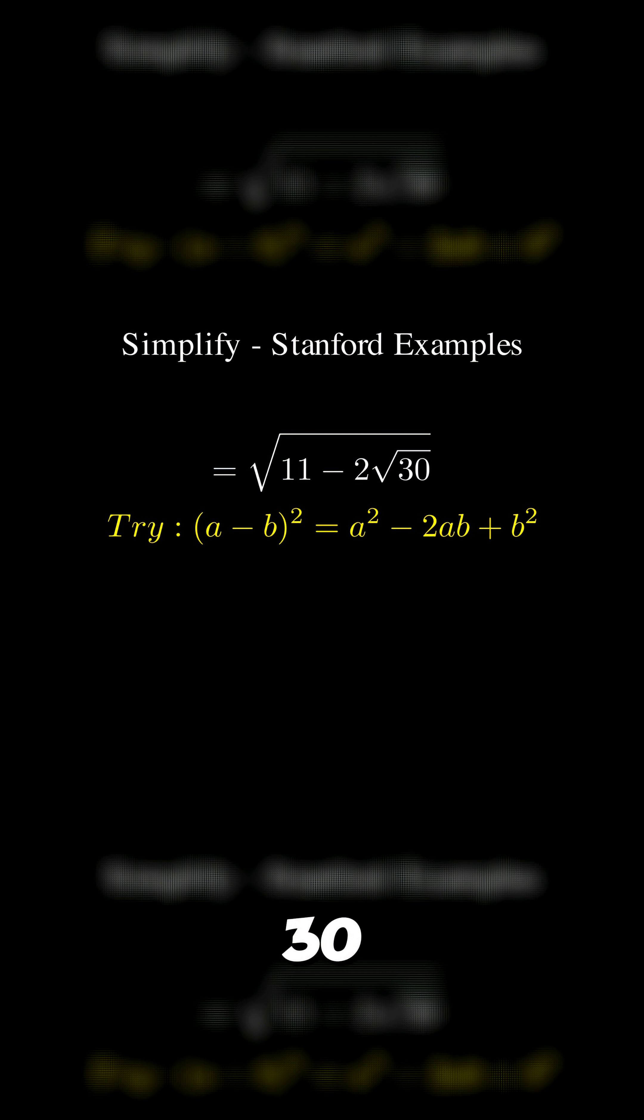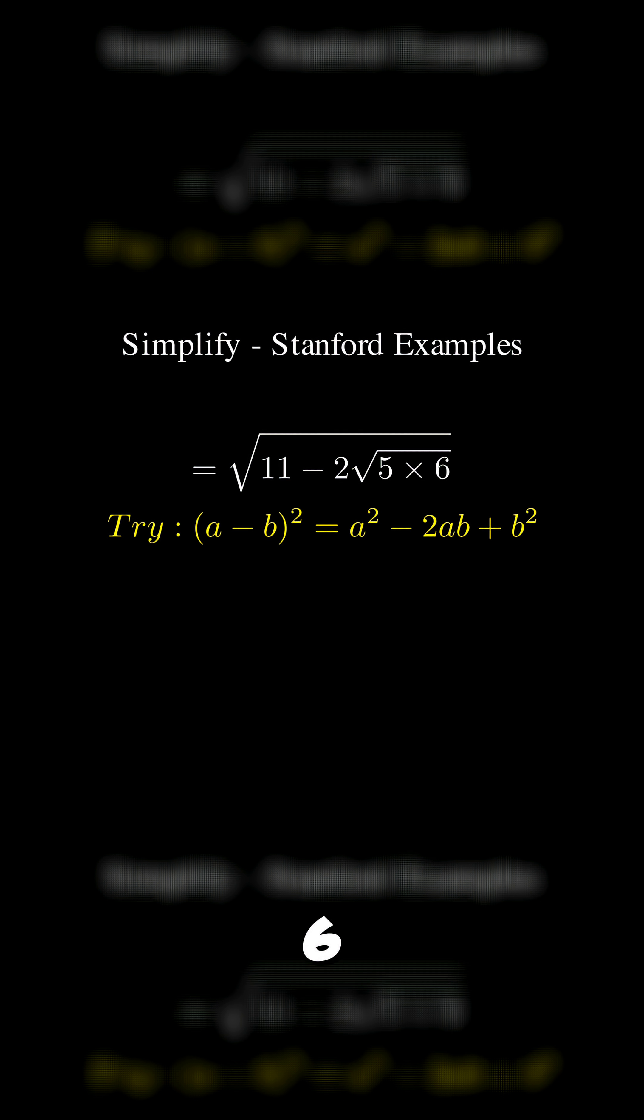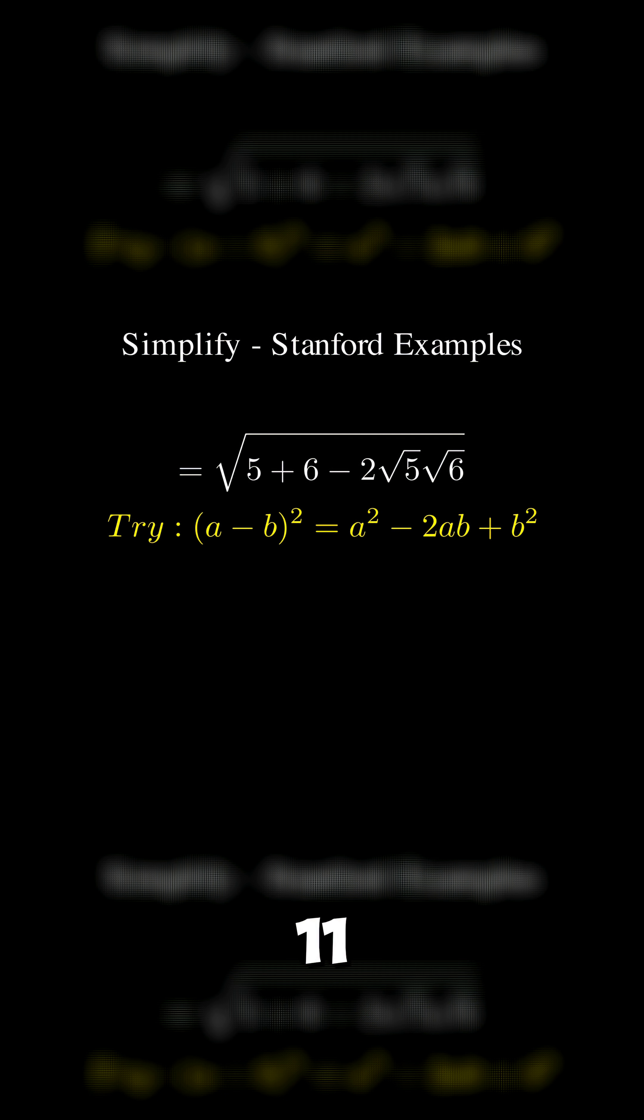First we can break 30 into 5 times 6 and then separate the roots. Next you write 11 as 5 plus 6. This helps us to align the expression with the formula.